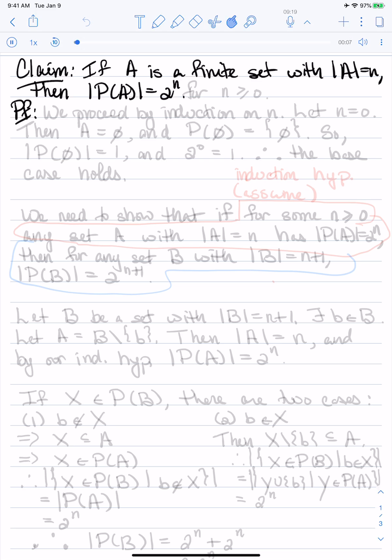We're going to use induction to show that if A is a finite set with n elements, then the cardinality of its power set is 2 to the n.